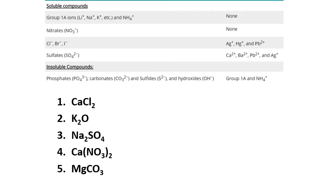Let's look at some examples. Our first example is calcium chloride. If we look at our solubility rules, we see that chlorides are usually soluble. If we look at the exception part of the table, calcium is not an exception, so this will be a soluble compound.